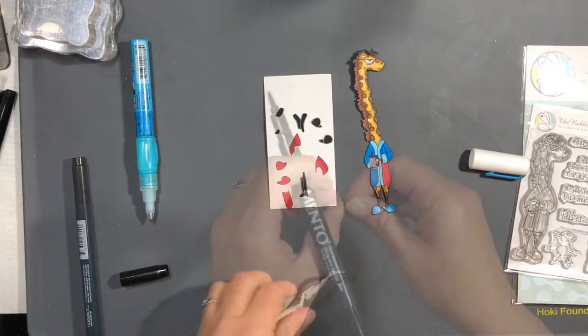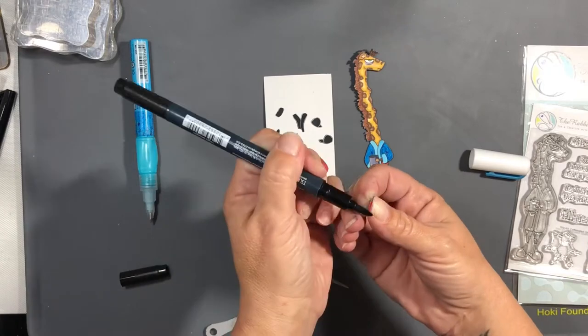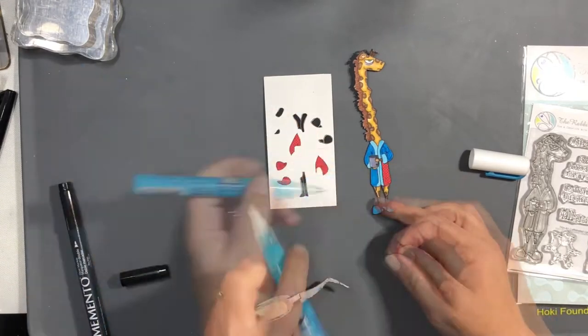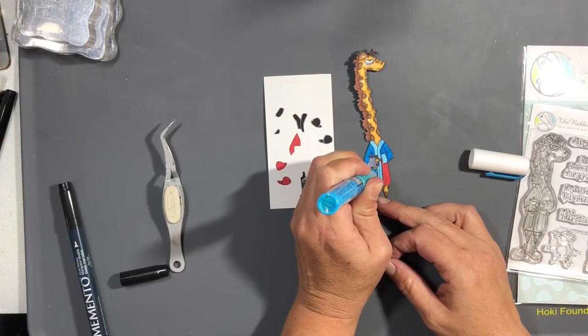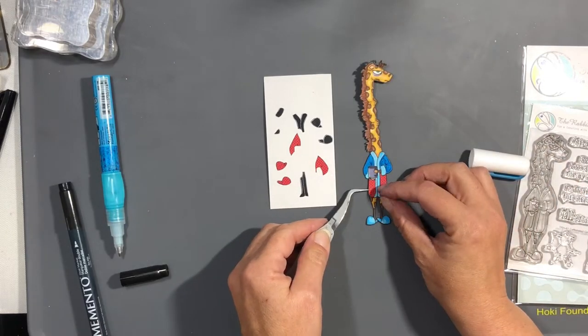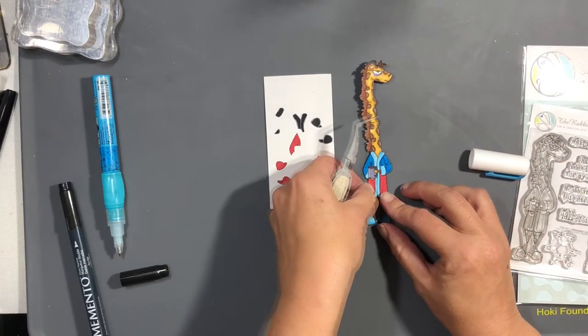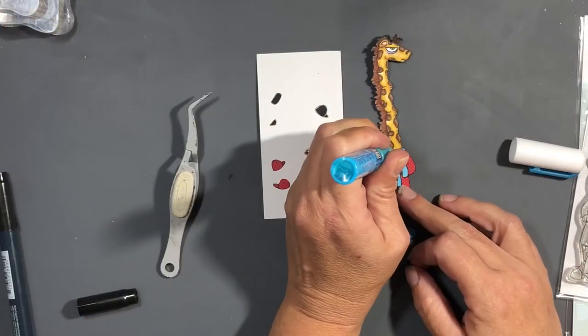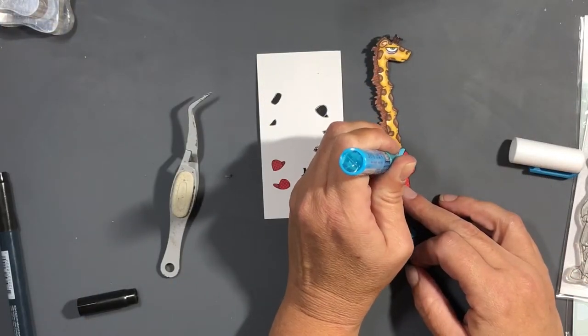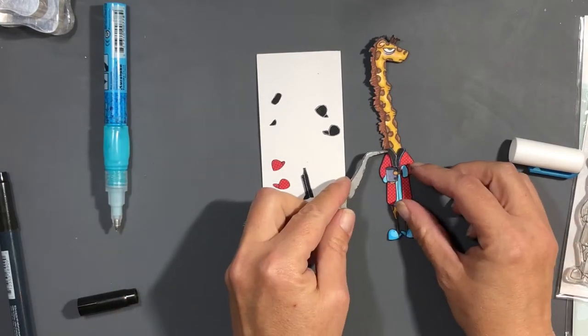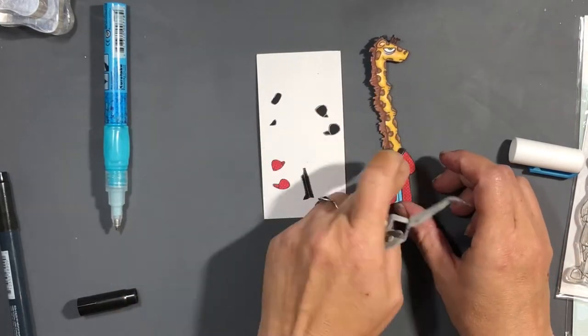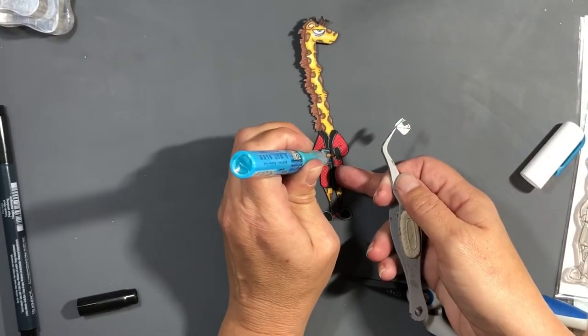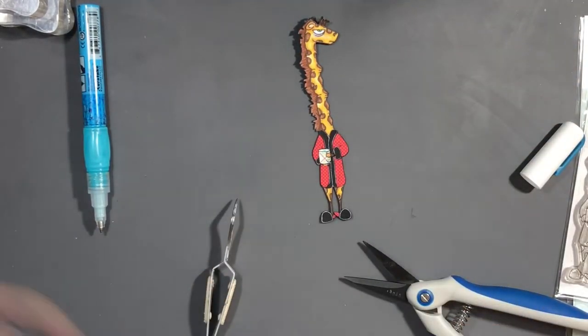I just used little scraps of pattern paper that I had left over and saved. You want to make sure you outline all of those after you cut them out to make sure they have a nice black finished edge, and then they look more finished when you glue them into place on the image itself. My two-way glue pen is the best way to place those because some of them can be very tiny.